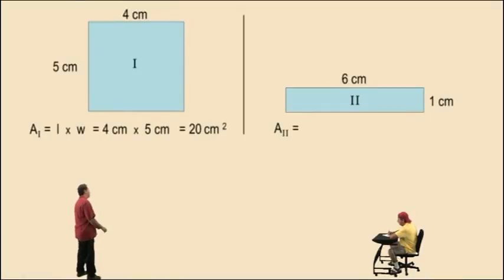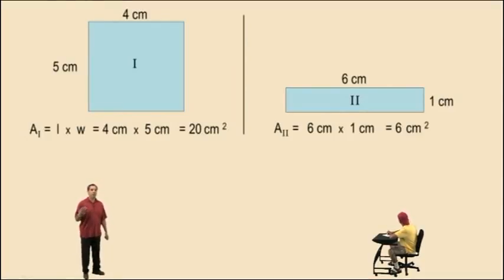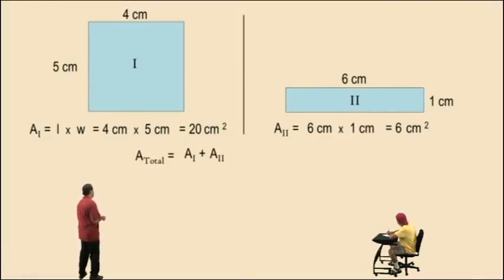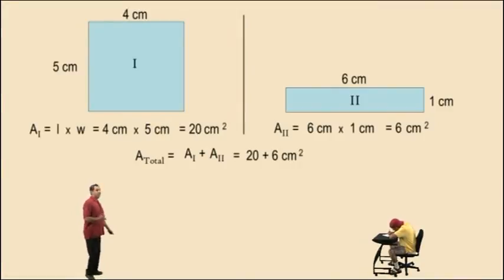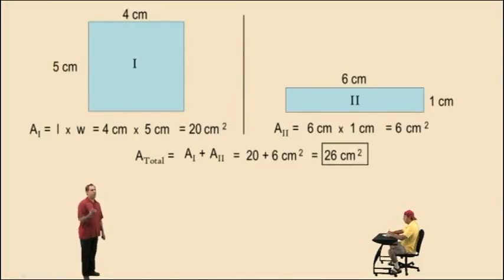Now for our second rectangle, we have 6 centimeters times 1 centimeter. 6 times 1 is 6, and centimeters times centimeters is centimeters squared. Remember, area is two dimensions — that's why area is represented by centimeters squared, because our dimensions are centimeters. To find the total area of our original shape, we add up area 1 and area 2. That's 20 plus 6 centimeters squared, which gives us 26 centimeters squared. Do not forget to write your dimensions — 26 centimeters squared. Also be sure to box or circle your final answer.